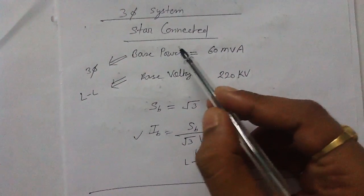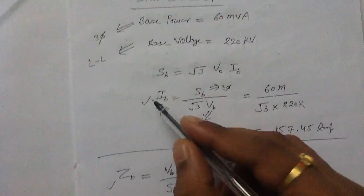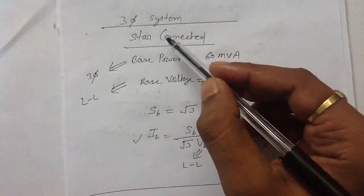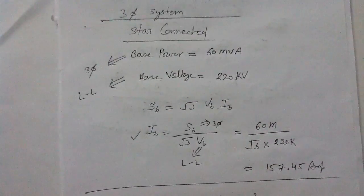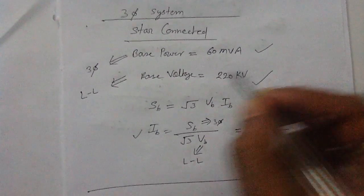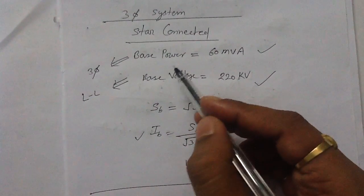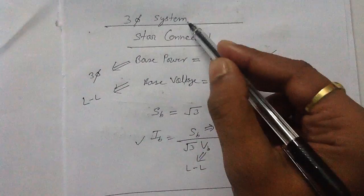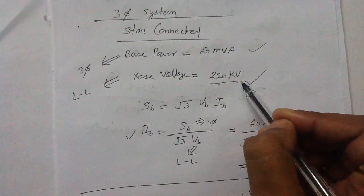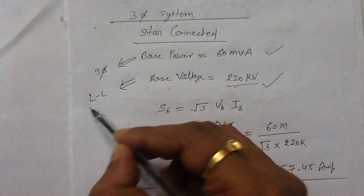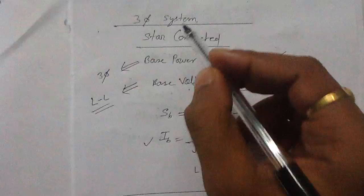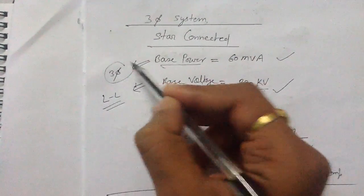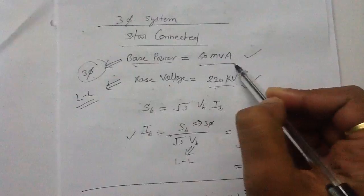Let's see what is the shortcut to find out the base current and the base impedance in the case of the star-connected three-phase system. Two things will be given to you: the base power and the base voltage. The base voltage of a three-phase system is 220 kV, and it is always the line-to-line voltage. The base power of a three-phase system is always the three-phase power.